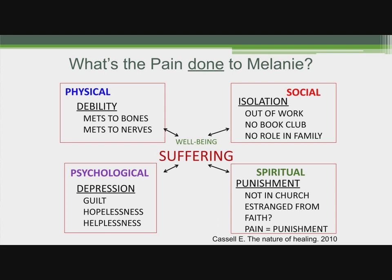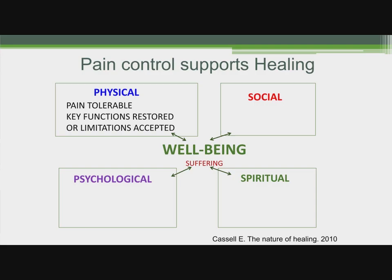To start with, I think we need to start with the physical. Because what we need to do is provide some pain control for Melanie. If we make the pain tolerable and we can get key functions restored or limitations accepted, that might go a long way to support her healing — even if her disease can't be stopped from spreading.